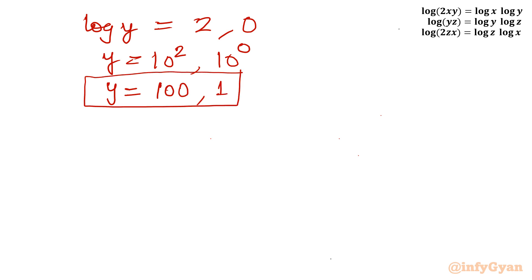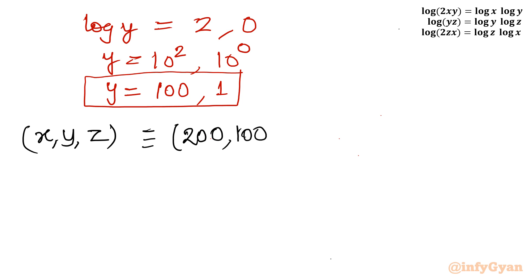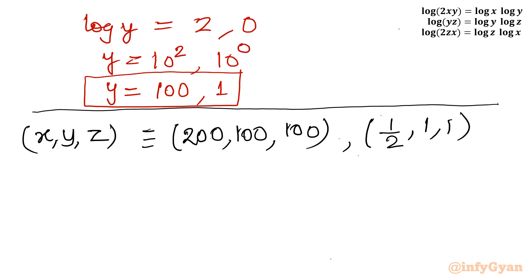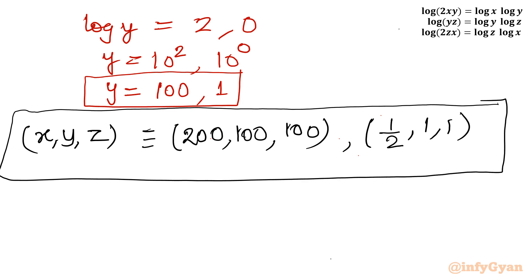We have calculated all the values. Writing in ordered pair form (x, y, z): the two solutions are (200, 100, 100) and (1/2, 1, 1). This is the ultimate solution for the given system of equations. I hope this video was meaningful to you. Do not forget to like, share, and subscribe. Bye bye till the next video — good luck and take care of yourself.